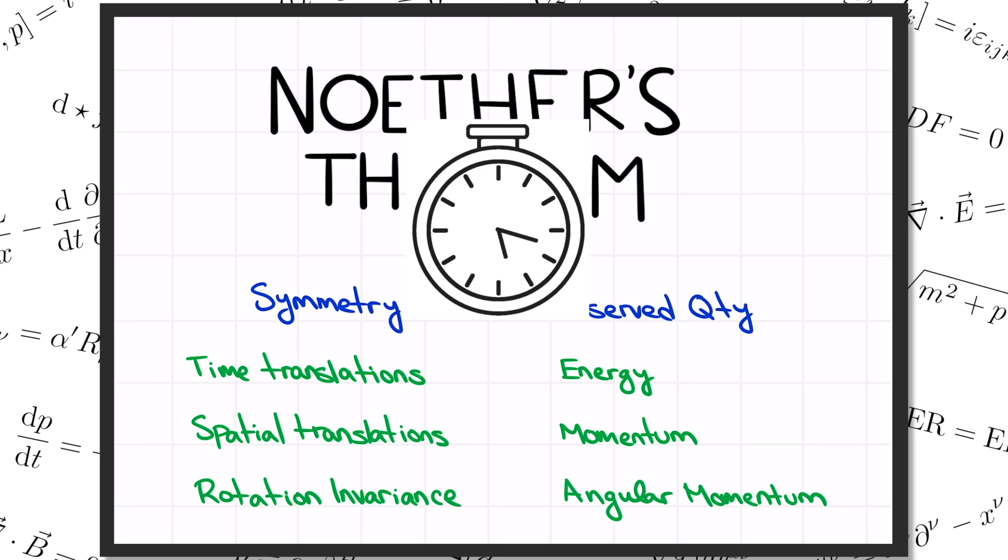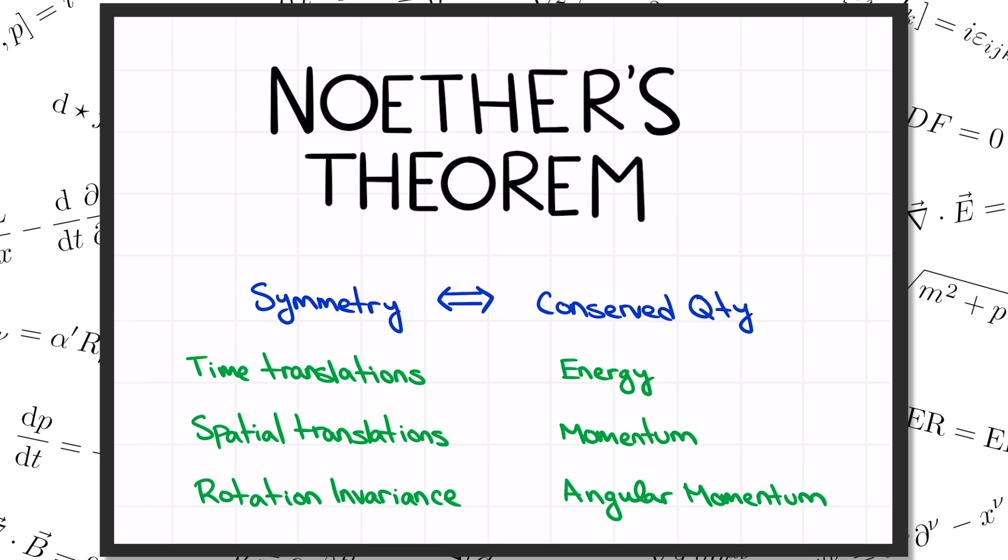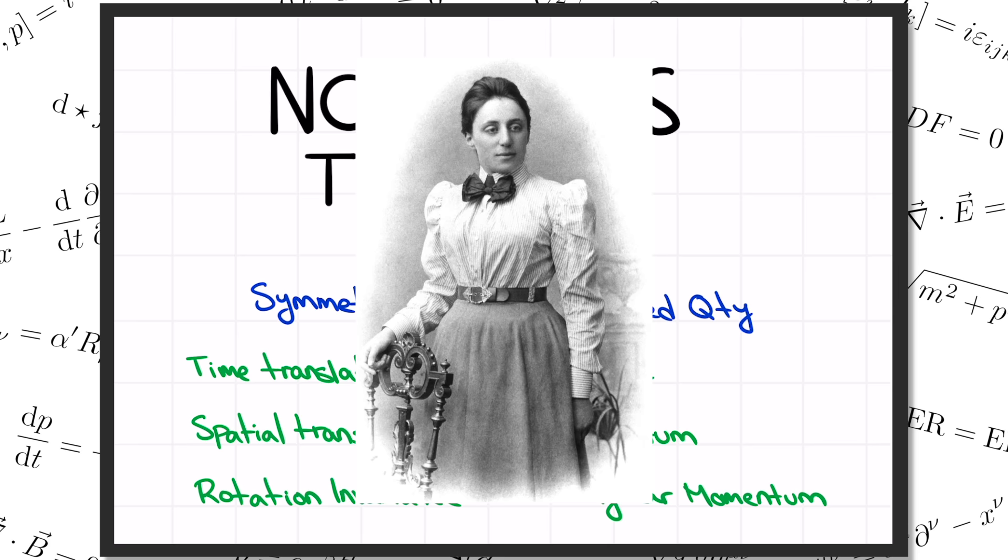Physicists are obsessed with symmetries. When you hand a physicist a new theory, the first thing they're likely to do is try to find as many symmetries in it as they can. It's symmetry that enables us to solve the quantum mechanics of the hydrogen atom, to write down the space-time geometry around a spherically symmetric black hole, to classify the kinds of particles that appear in the standard model of particle physics. And in this enormously important subject of symmetry, the central pillar is this theorem.